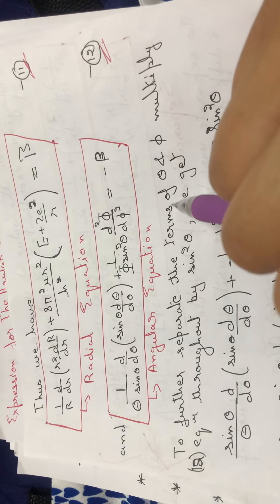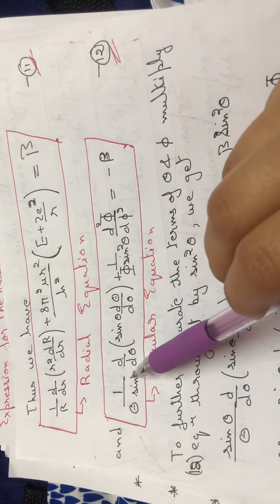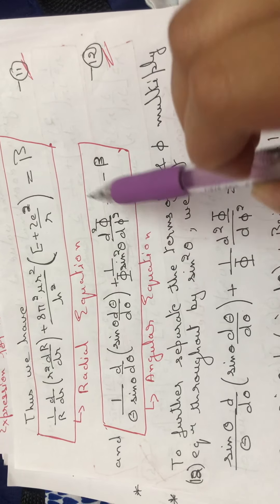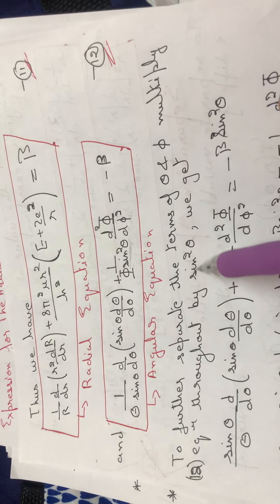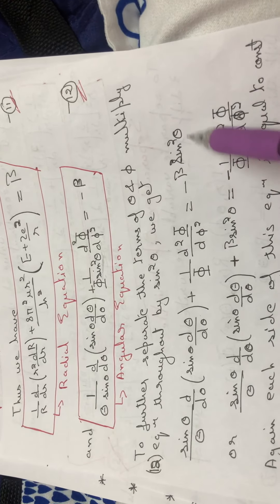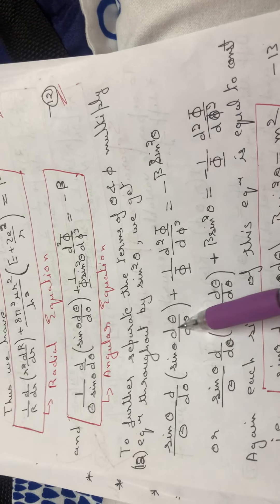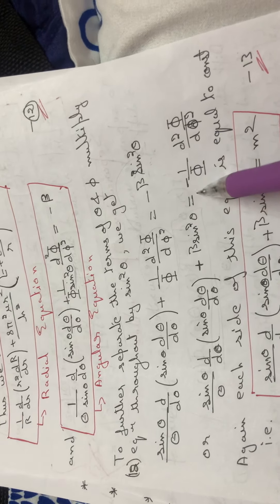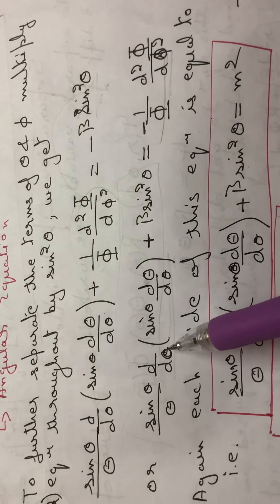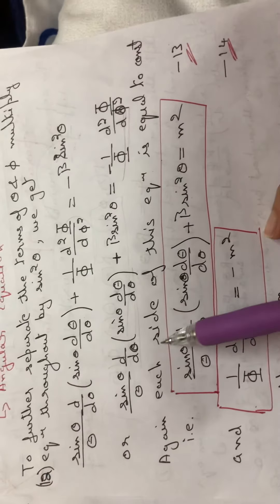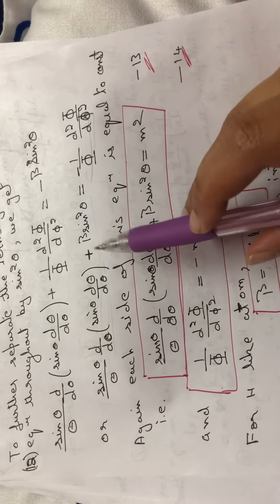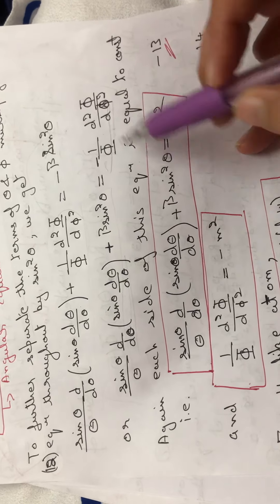To further separate θ and φ in the angular equation, we multiply through by sin²θ. This moves the φ terms to one side and the θ terms to the other side. Again, since two sides of the equation must be equal independently, each side equals the same constant — let that constant be m². So the φ part equals m² and the θ part equals −m².